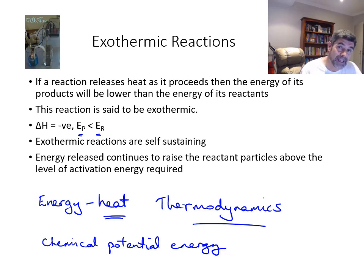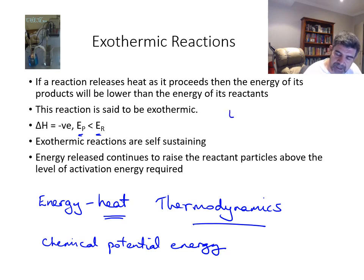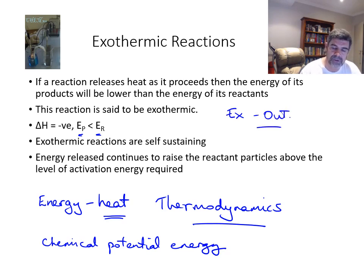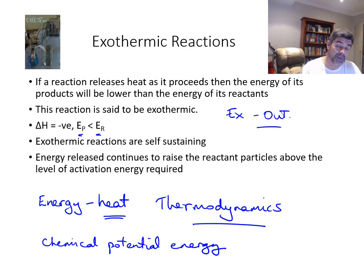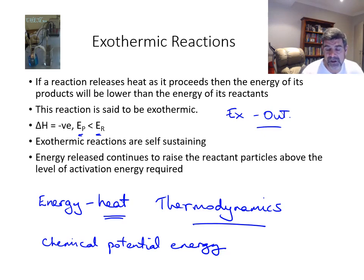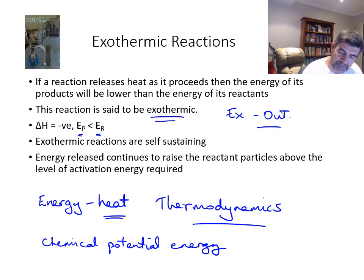We use the terms exothermic and endothermic in order to describe these. When we're looking at an exothermic reaction, 'exo' is like external or exterior — it basically means out, so that heat is released from the system to the surroundings. Then as the reaction proceeds, if there is excess heat energy being released from the system to the surroundings, then the products will be at a lower energy level than the energy locked up in the bonds in the reactants. This is an exothermic reaction.